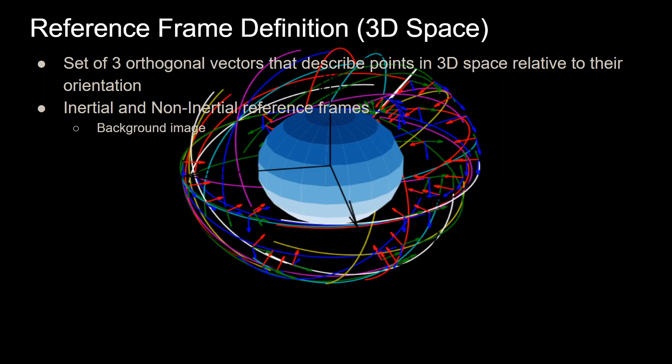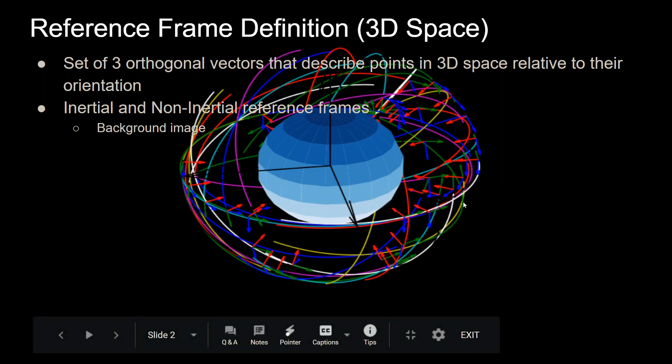Now there are inertial and non-inertial reference frames. An example of an inertial frame, which is one that does not move, does not accelerate, is an Earth-centered inertial frame which is shown in this background image as black arrows with the XYZ of the Earth-centered inertial frame. Some non-inertial frames are the frames that are attached to each one of these little spacecraft which are rotating as they move around the Earth.